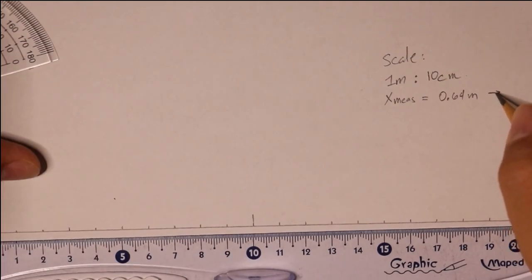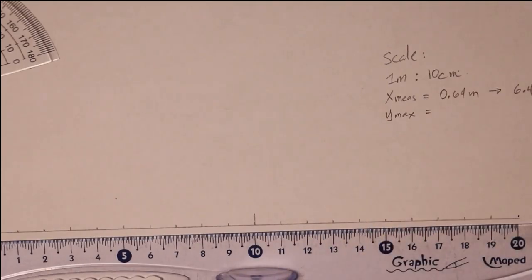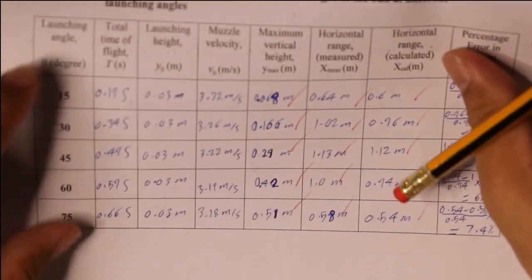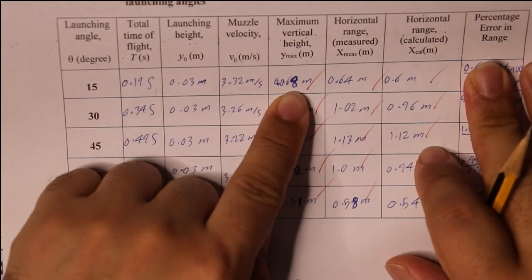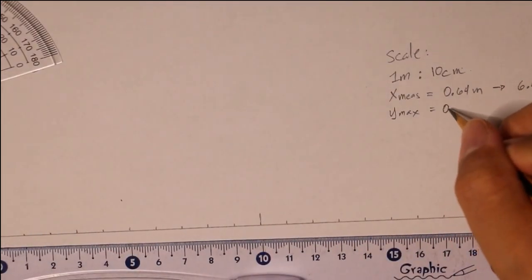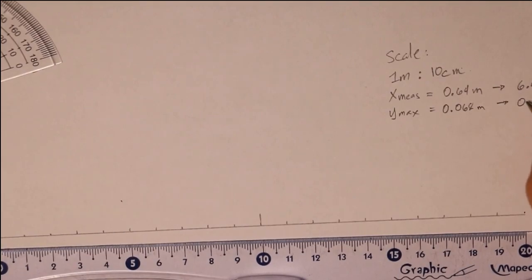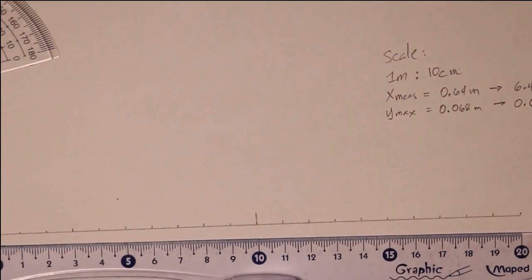If your X measured or X calculated is equal to 0.64 meters, what is the equivalent value in centimeters? According to the scale, just multiply it - 6.4 centimeters. The Y maximum, the maximum height the projectile has reached at 15 degrees, is 0.068 meters. Multiply it by 10 and you will get 0.68 centimeters.